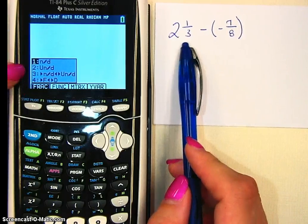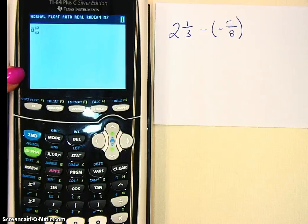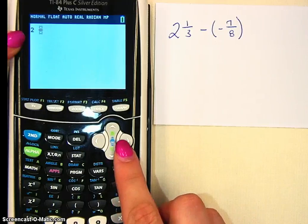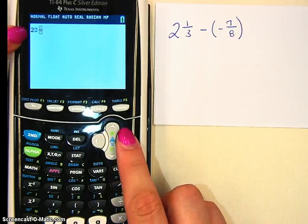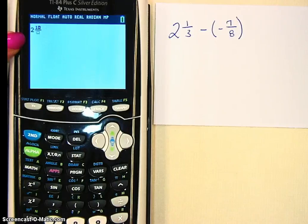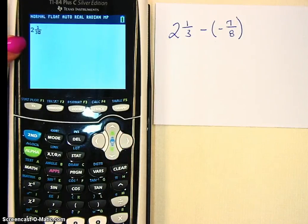Our first option we need to use is 2 because that's a mixed number. So I'm going to arrow down to 2 and hit enter. Notice it's going to blink. The first thing I'm going to put in is a 2. I'm going to use the right arrow button and type in 1, and then go to the right again, 3, and then go to the right again to get out of the fraction.